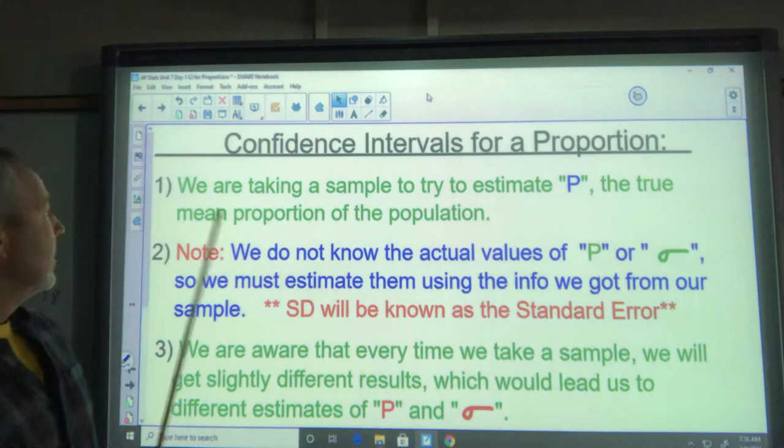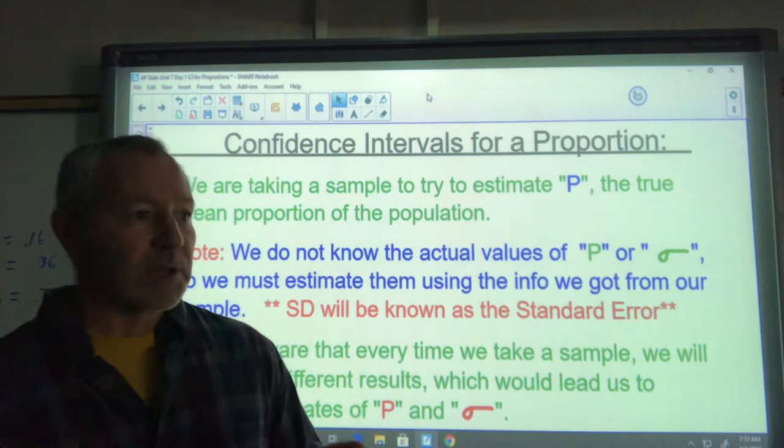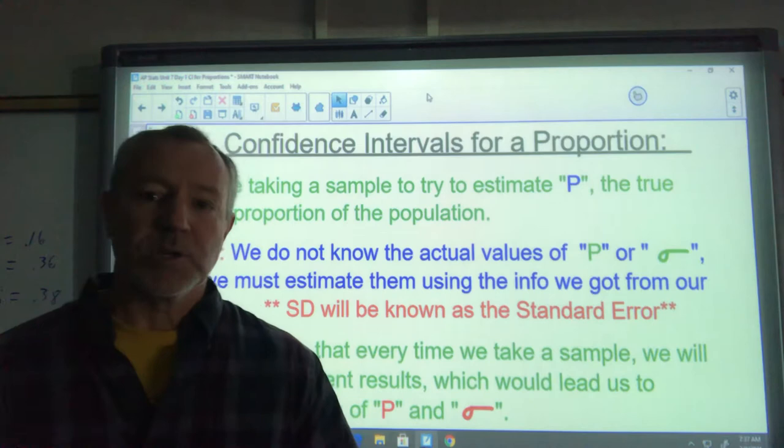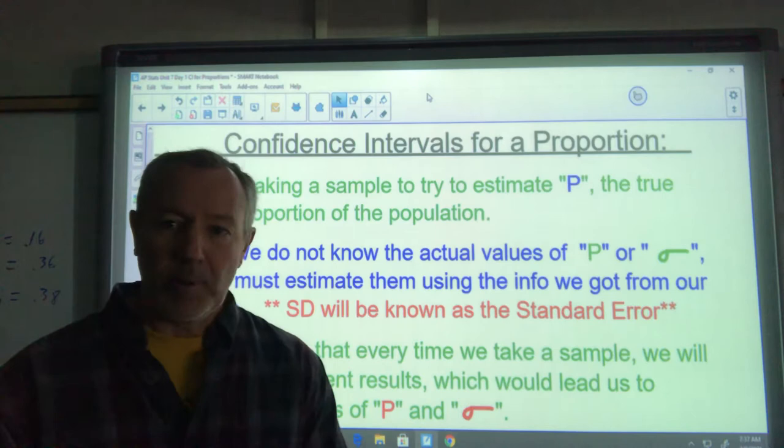We're taking a sample and trying to estimate P. In the problems we've been doing, I've been telling you the true proportion of left-handers are 17%. That's when we know that true proportion. This is the case for confidence intervals where I don't know the proportion. We're taking a sample and trying to figure out what the real proportion is.